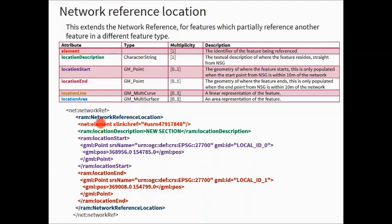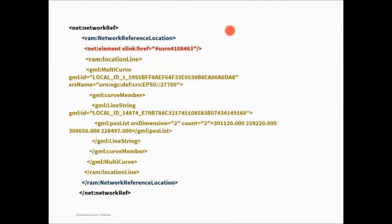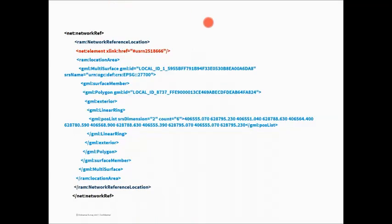For the start and end point example, we provide the geometry of exact points snapped to the street feature if within 10 meters of the network. For the location line example, a line that intersects completely or partially with the street feature at that location — we give the line string ID and actual line geometry. Finally, the area can be, for example, a polygon area of a neighbourhood where certain things are not allowed or should be done in a specific way.